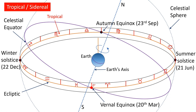These four points — the two equinoxes and two solstices — correspond to 0 degrees of Aries, 0 degrees of Cancer, 0 degrees of Libra, and 0 degrees of Capricorn. Thus the zodiac is divided into four parts of 90 degrees each by these four points, representing the beginning of Aries, Cancer, Libra, and Capricorn. These points are used in marking the seasons on Earth.